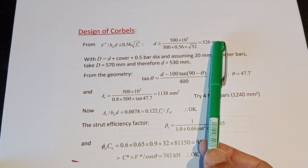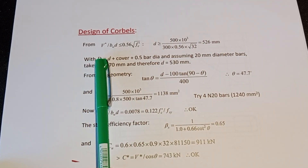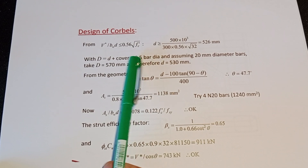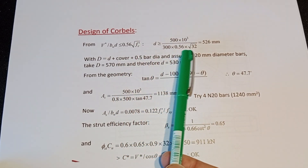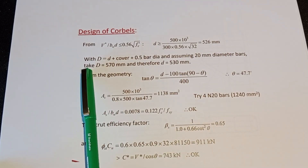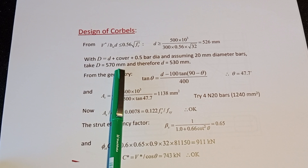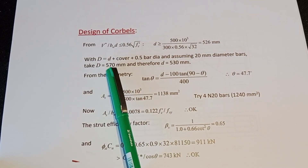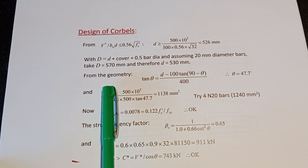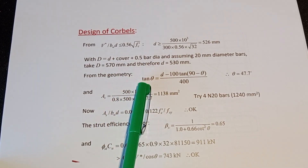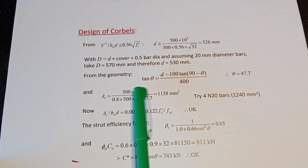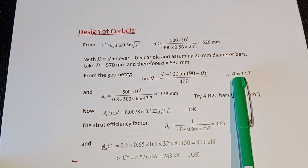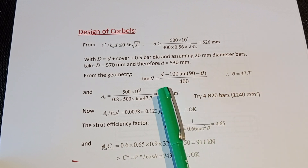For the total depth D = d + cover + half bar diameter. Assuming a 20 mm bar diameter and 30 mm cover, D ≈ 575 mm, which we round to 570 mm, giving a working effective depth d = 530 mm. This is our starting assumption. From the geometry, tan(θ) = d / a, which gives θ = 47.7 degrees.